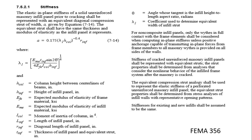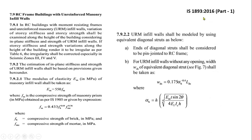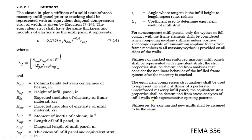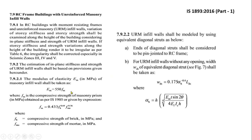Now, the IS 1893 guidelines say that we should model the strut in the same way as FEMA 356 — the formulas in both codes are similar. What IS 1893 additionally provides is the ability to find fm, the masonry strength. When modeling the masonry infill, we need Em — the expected modulus of elasticity of infill — which is also needed in the FEMA 356 approach.